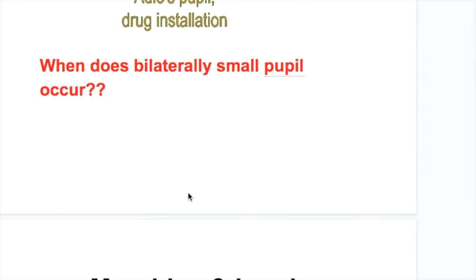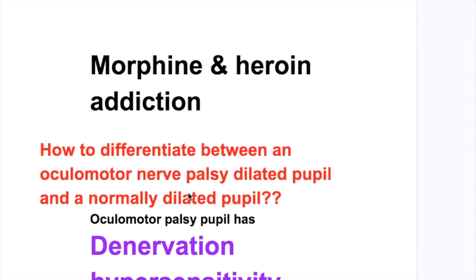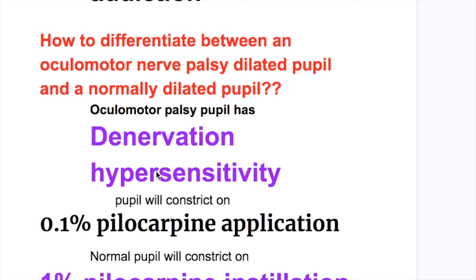Bilaterally small pupils occur in morphine and heroin addiction. They can also occur in pontine hemorrhage.